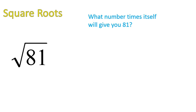Square roots are the opposite of squaring a number. Squaring a number is another word for raising it to the power of 2. A square root looks like this. So this would be read as the square root of 81. What it means is what number times itself will give you 81? Well, 9 times itself will give you 81. 9 times 9 is 81, or 9 squared is 81.